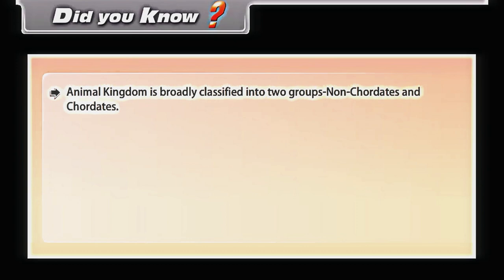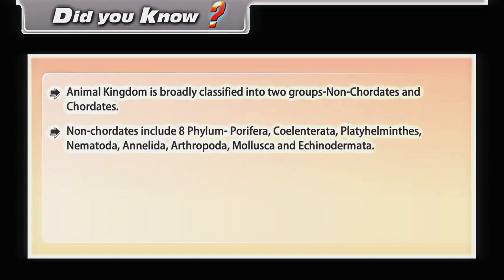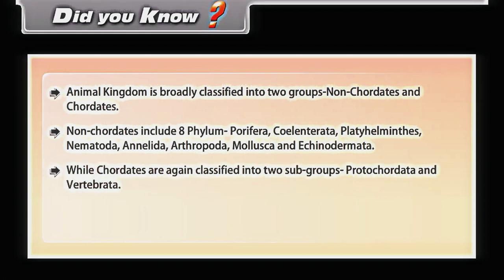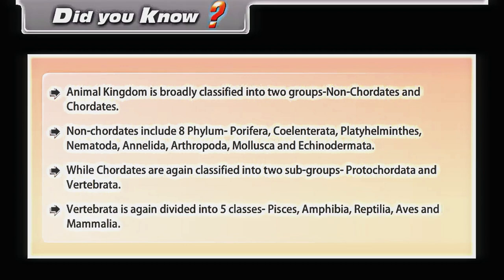Animal kingdom is broadly classified into two groups: non-chordates and chordates. Non-chordates include 8 phyla: Porifera, Coelentrata, Platyhelminthes, Nematoda, Annelida, Arthropoda, Mollusca, and Echinodermata. Chordates are classified into two subgroups: Protocordata and Vertebrata. Vertebrata is again divided into five classes: Pisces, Amphibia, Reptilia, Aves, and Mammalia.